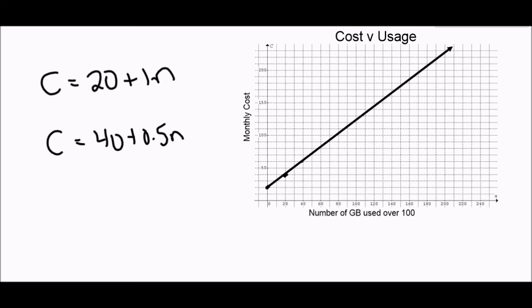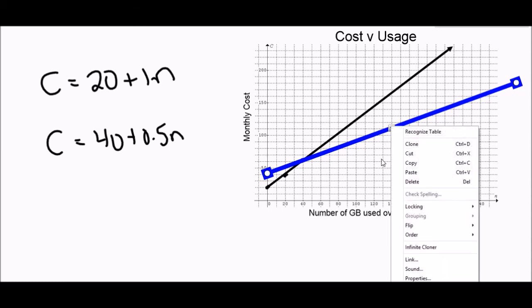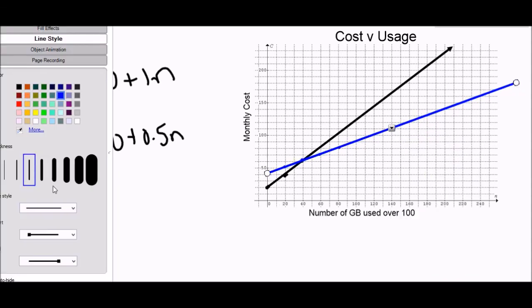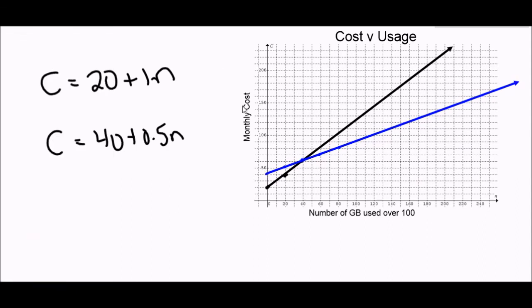So the other line. Let me grab another color here. The other line starts at $40. And now it's only $0.50 for every extra gigabyte. So 20 extra gigabytes would only be $10 extra. So every 20 gigabytes is another $10. So I can start to see where this line is going to be. So let me grab my line tool. Draw a lovely line. This line is going to look weird at first. And then I'll fix it. So there it is. Let me fix that line for you. Perfect.